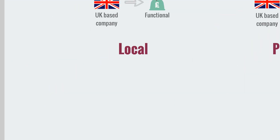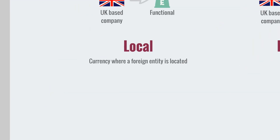The local currency is the currency of the country in which the foreign entity is located. Usually it's going to be the same as the company's functional currency — what determines your functional currency is that you're based in that country, that's where your offices are, where you pay taxes, where your bank account is. However, that's not necessarily always the case, because nowadays companies have offices all over the world. Their headquarters may be somewhere different to where they do the majority of their business, so in some cases local currencies can differ from functional currencies.